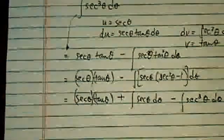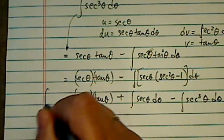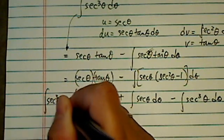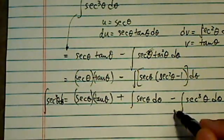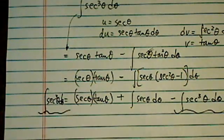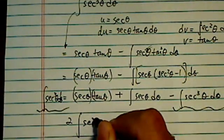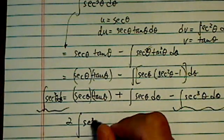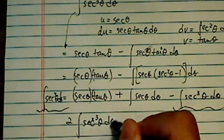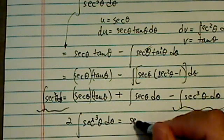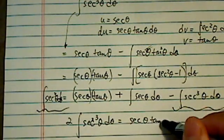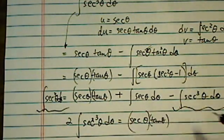This is important because on this side, remember I started with a secant cubed theta d theta. So combine this term with this term, I'll have twice of that, which is great. Secant cubed theta d theta is equal to, this part is already integrated. So copy it over here.